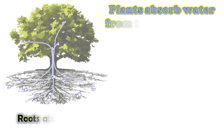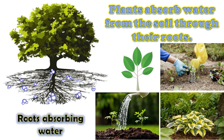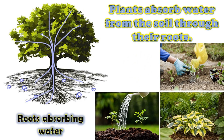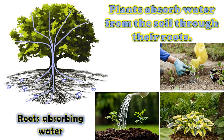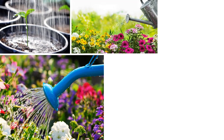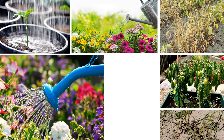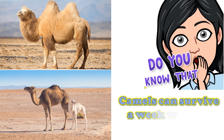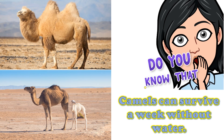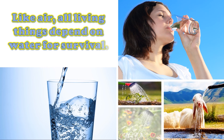Plants absorb water from the soil through the roots. Besides carbon dioxide, green plants also need water to make their food. Water helps transport nutrients in plants too. Water also physically supports the plants and cools them. When there is not enough water, the plants will wilt. Camels can survive a week without water; they have humps on their backs that store fats, which they can turn into food and water when needed. Like air, all living things depend on water for survival. We should keep the water in our surroundings clean for healthy living.